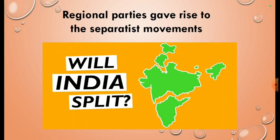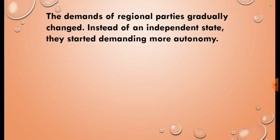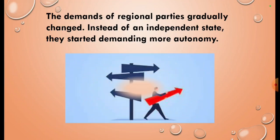They demanded to exist as different, separate regional states. For example, states like Punjab, Tamil Nadu, and Jammu and Kashmir made such demands. The demands of regional parties gradually changed — instead of an independent state, they started demanding more autonomy. This was the second stage in the development of regional parties.